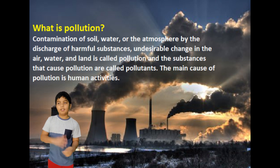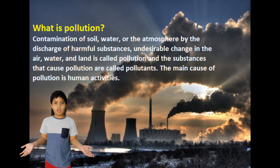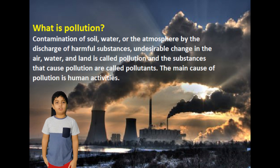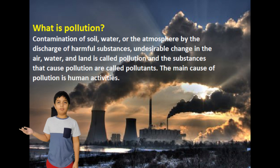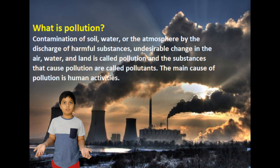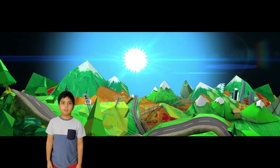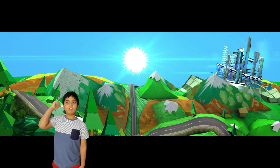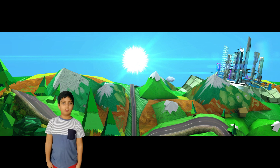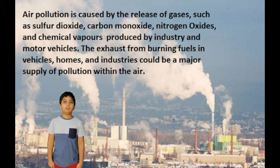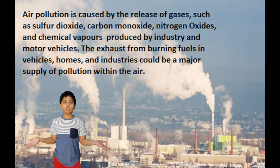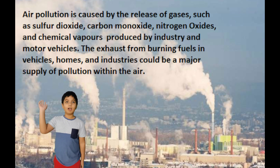Now let's talk about pollution, its causes and its effects. Pollution is the addition of harmful substances into the environment. Those harmful substances are called pollutants. Pollution adversely affects the health and other activities of all living organisms. There are basically three types of pollution: air pollution, water pollution, and land pollution. First, we are going to talk about air pollution. The addition of harmful gases such as carbon dioxide, methane, and smoke into the air is called air pollution. It is caused by smoke from factories and harmful gases from cars and other vehicles.